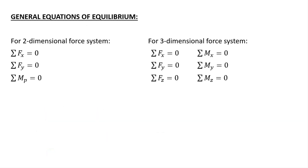Now the general equations of equilibrium. We divide it into two parts: for two-dimensional force systems and for three-dimensional force systems. In general, we will consider only the two-dimensional force system and solve numericals accordingly. In a two-dimensional force system, there are three equations of equilibrium. A force system that satisfies all three equations is said to be in equilibrium; if it does not satisfy any of these equations, the system is not in equilibrium.